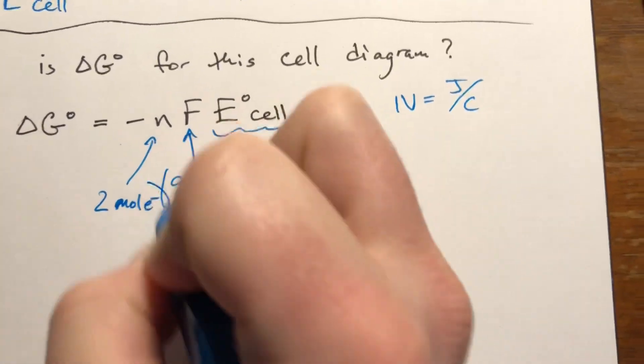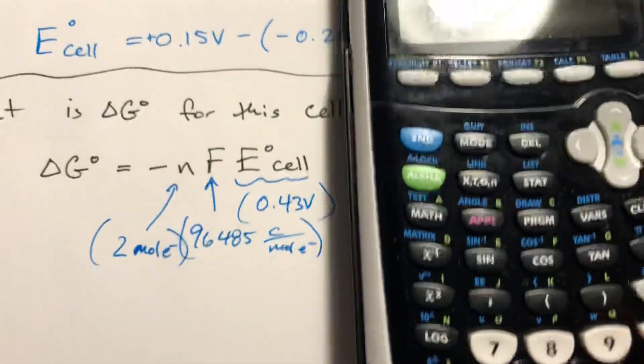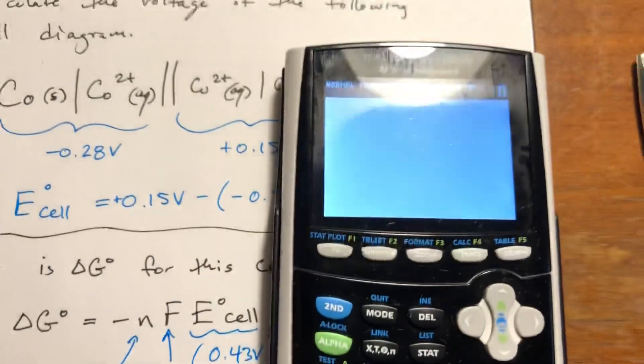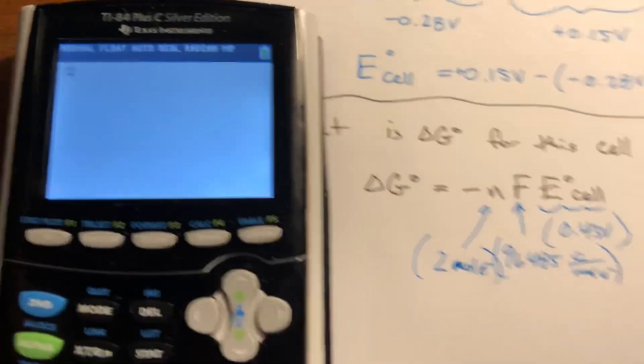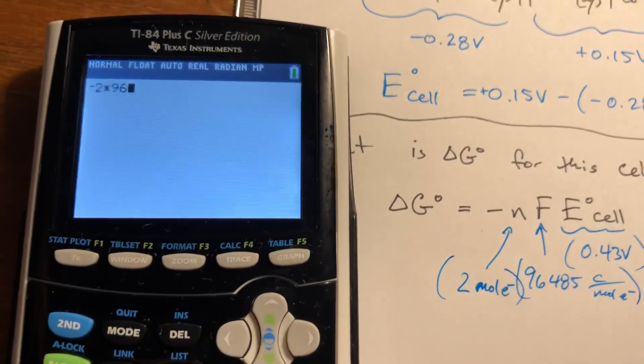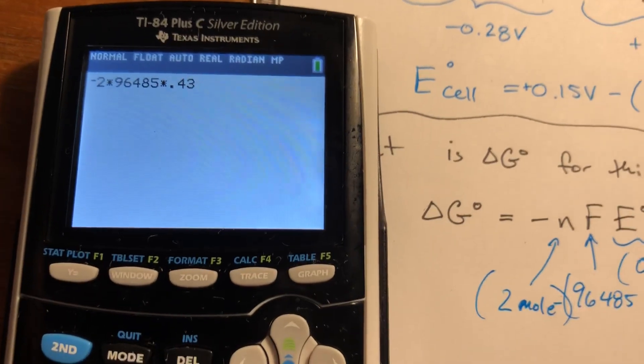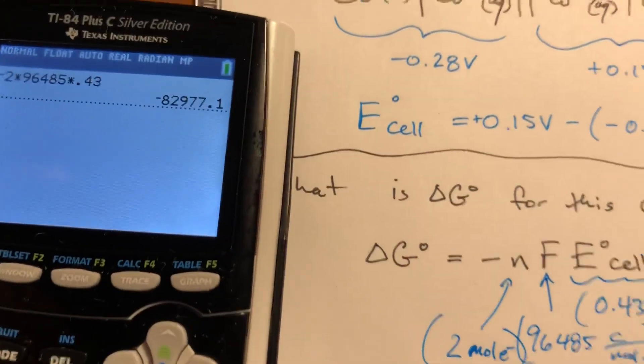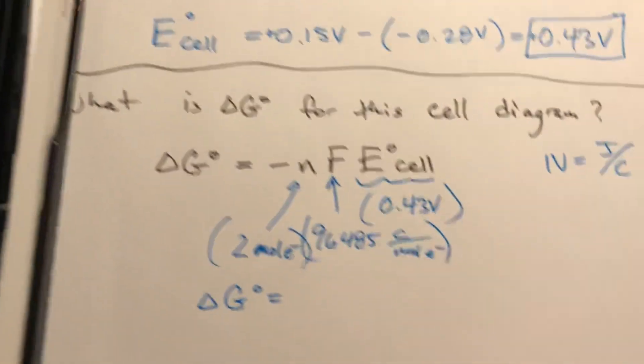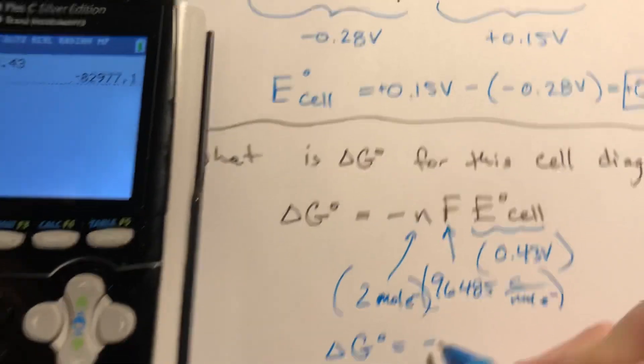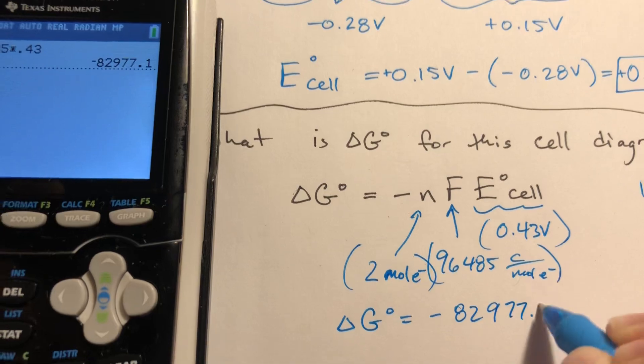So I didn't write this very nicely, but essentially we're just multiplying all three of those numbers together. So there is a negative sign in the front. So minus 2 times 96,485, so we're gonna get a pretty big number here, times 0.43. So we got a huge number. So delta G at standard conditions equals negative 82977.1.